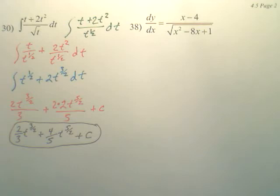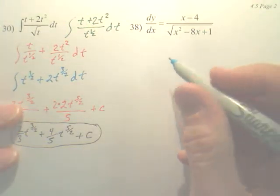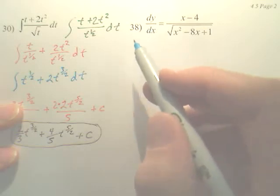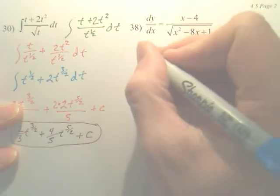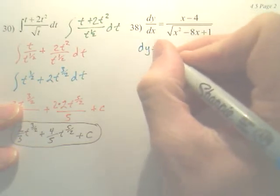Okay, for 38. What we're trying to do is find the original equation. This is the derivative. To find the original, the first thing you want to do is make it a differential.